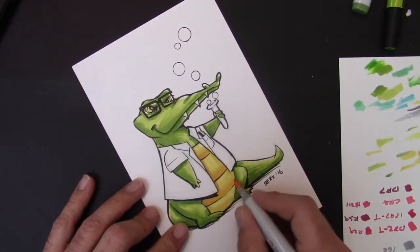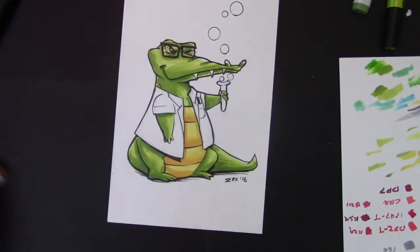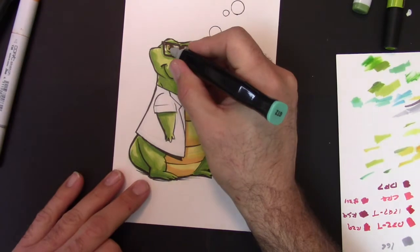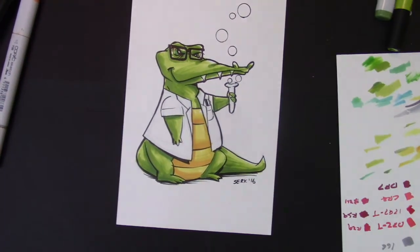So anyway, as far as the process is concerned, that's what I'm doing here. So let's talk a little bit about, I'm using, for this illustration, I'm using a variety of alcohol-based markers, mostly Copics or Copics, however you want to pronounce them.